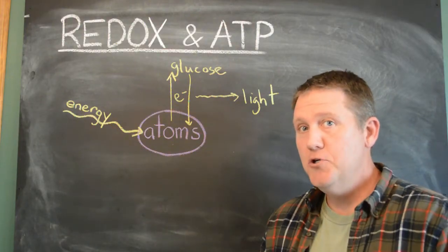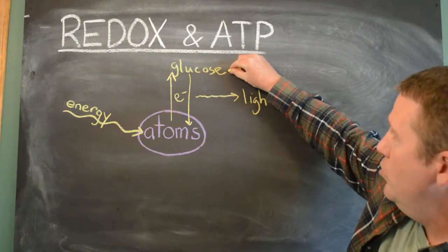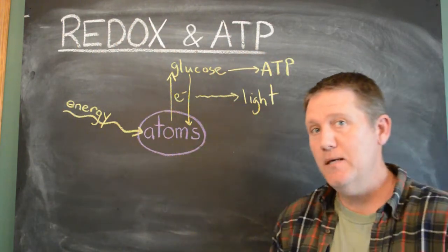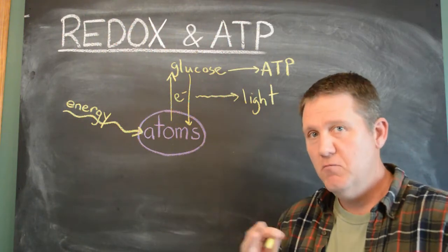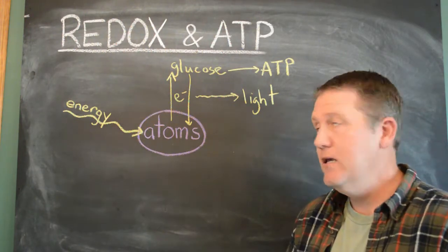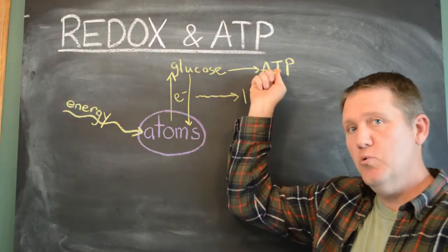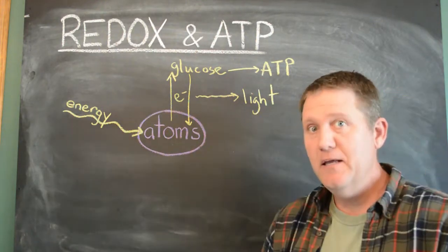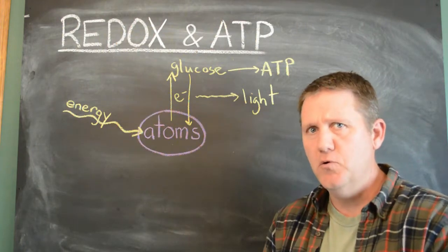All right, so we're extracting energy from glucose, and we're putting it into ATP, a bunch of ATP, 30 or so ATP molecules, and it's stored there. But then it can transfer energy to do work, like moving muscles, thinking thoughts, digesting food.